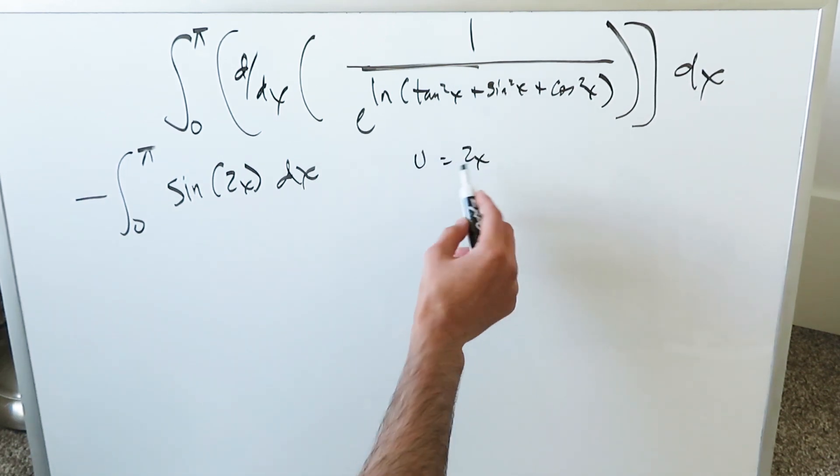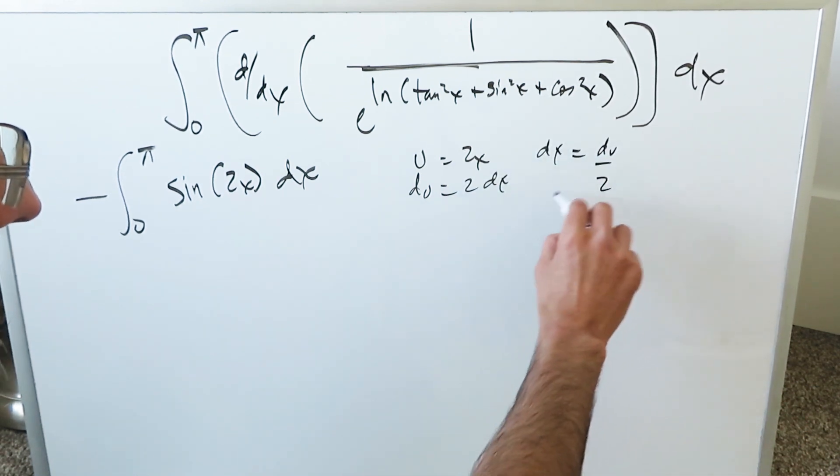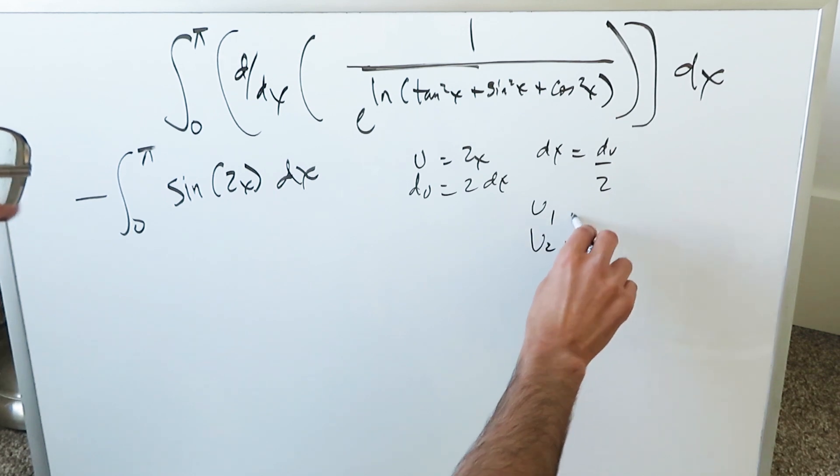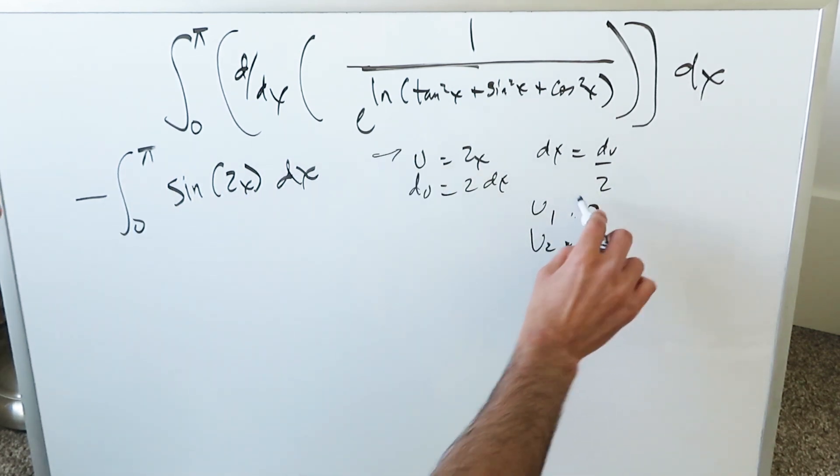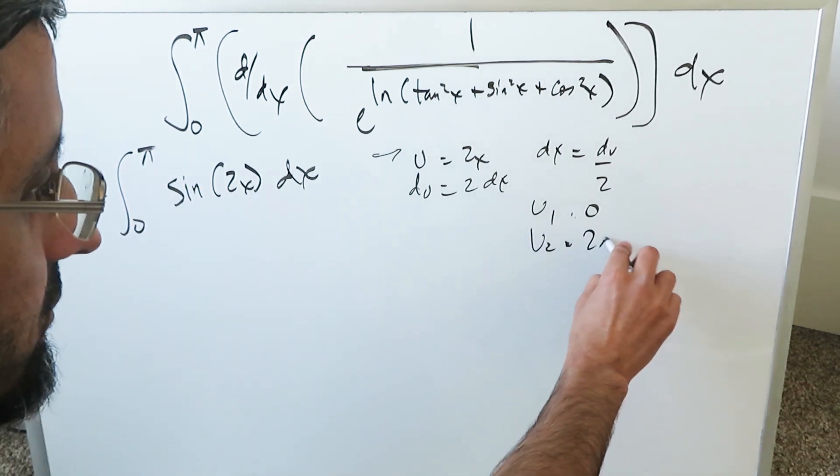u is equal to 2x, u substitution. du is equal to 2 dx. dx is equal to du over 2. u1, u2 new limits: 0 and pi with regards to this. u1 is 0 times 2. u2 is 2 times pi which is 2 pi.